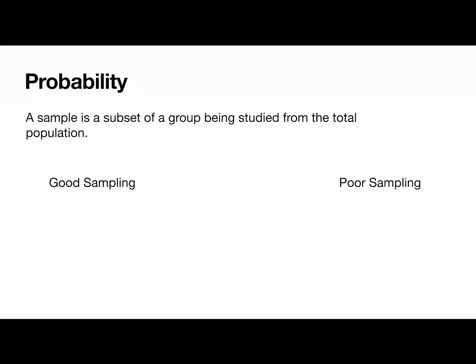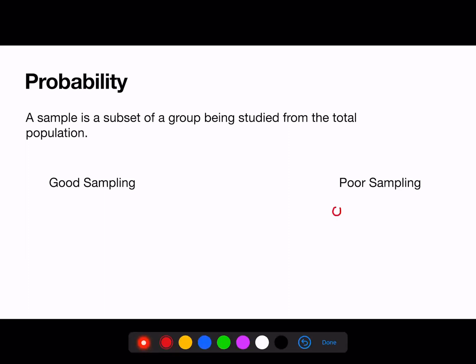First, let's review random sampling. A sample is a subset of a group being studied from a total population. The exam will test you on your ability to identify a valid sampling method. Poor sampling will gather data outside the scope of the population. One example may be surveying parents at a school about the opinions of students instead of asking the students themselves.